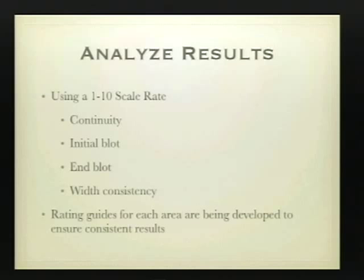The general pen testing process: uncap the pen, draw five parallel lines four inches long in rapid succession, recap the pen, and analyze the results. You want to rate each of four areas on a scale from one to ten. We are actually developing rating guides that will provide very consistent results on what a one is, two, three, four, five, and all the way up through ten — to make sure that two testers looking at the same test results or testing the same pen will get the same results. We look at things like continuity: is the line solid? Are there any breaks? Is it smooth? Is there any initial blot? On some pens when you first put down the pen, you get a heavier ink and then it moves into a line. Are there any end blots? End blots are something you'll notice with things like Microns and other disposable drafting pens. And then width consistency: is the width of the pen line consistent across the board?